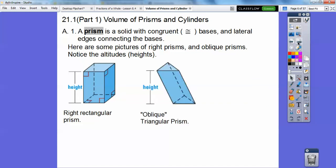Well there's infinitely many more. This is called an oblique triangular prism. Notice the bases are congruent and they're supposed to be in parallel planes. And then notice the height. The height is a perpendicular segment that goes from one base to the next base.